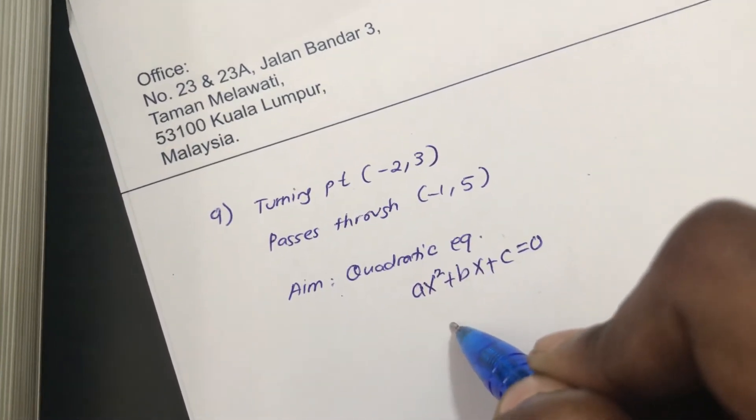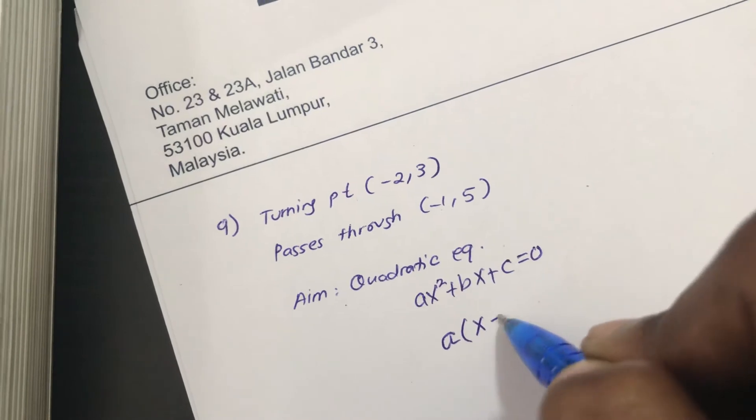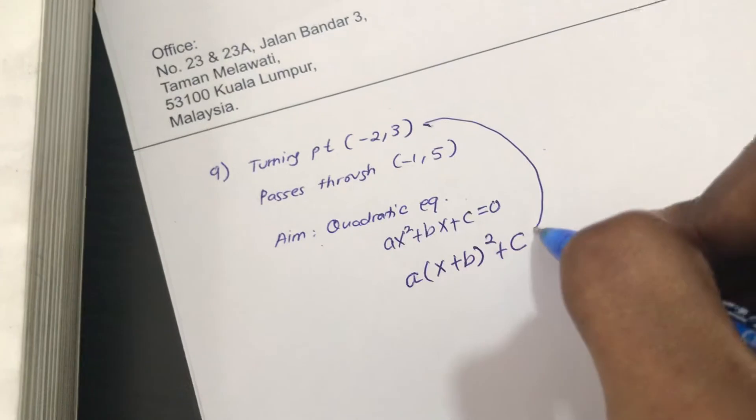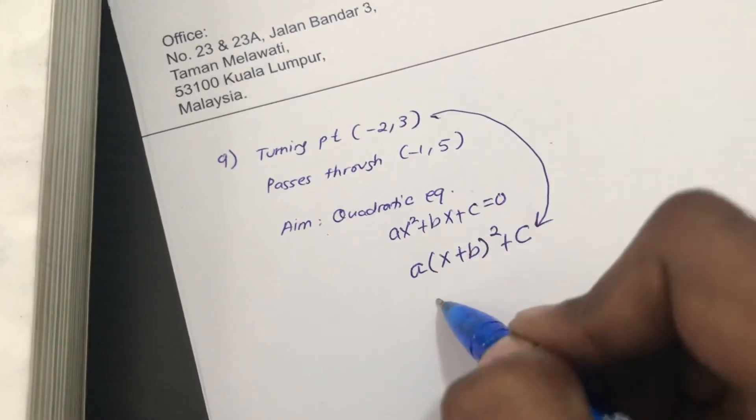you can actually use this completed square format. This is much easier. Why? I have a vertex, right? So I can change and write it this way.